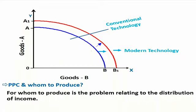In how to produce, we have two techniques of production: first is labor intensive and second is capital intensive. Labor intensive techniques are also known as conventional techniques because we have been using these techniques for a long period. When we use conventional technology, our PPC production level is at points A and B.